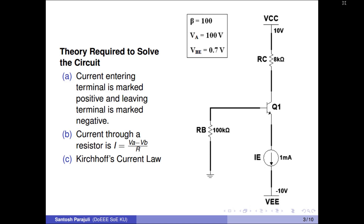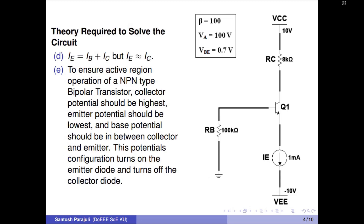Concept C: the sum of entering currents at a node is always equal to the sum of outgoing currents through that node. Concept D: irrespective of transistor operating region, emitter current is always equal to the sum of base and collector currents. This is simply Kirchhoff's current law.